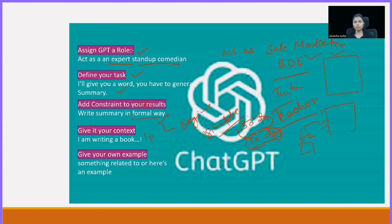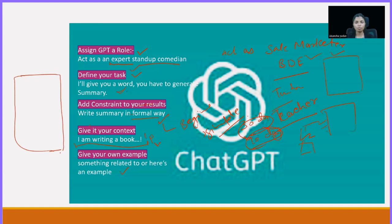After adding the constraints, you have to provide context to your ChatGPT prompt. Then, if possible, you can also provide an example. Suppose you have to generate some sales funnels — you can give an example saying 'my competitor is Amazon, tell me what strategy I can follow.' If you provide an example, ChatGPT can easily relate to it. That is how you write the whole prompt.